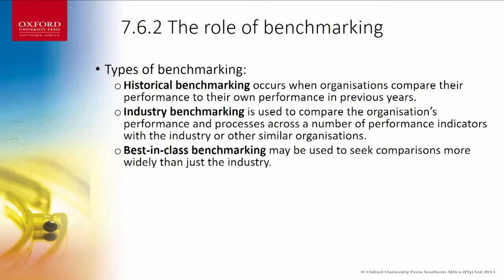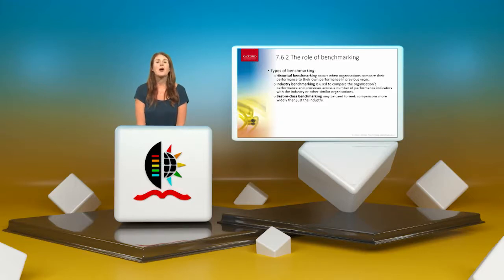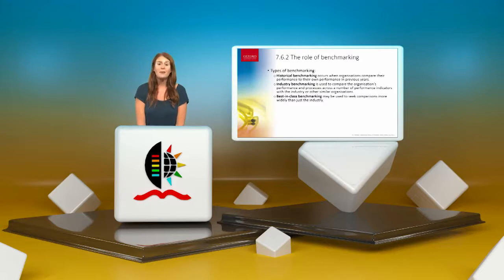Benchmarking — check against your competitor, check against the market, and know where you stand. There are three types: historical benchmarking — comparing your performance to your own previous year's performance; industry benchmarking — comparing yourself against similar organizations in your industry, especially if you have no prior history; and best-in-class benchmarking — comparing more widely than just your industry, for example comparing a hospitality organization against the broader tourism and travel industry.